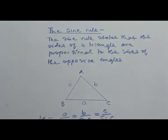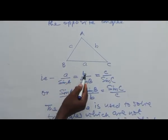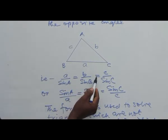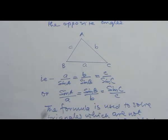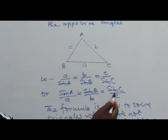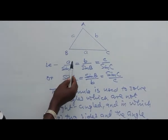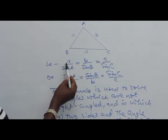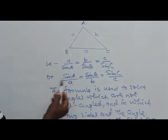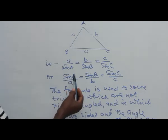In the sine rule, side a over sine of angle A equals side b over sine of angle B, and equals side c over sine of angle C. Or equivalently, sine A over a equals sine B over b equals sine C over c. The first form is used when you want to calculate the length of a side; the second is mainly used when you want to calculate any of the angles of the triangle.